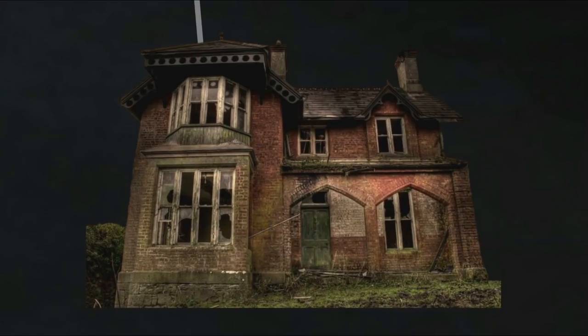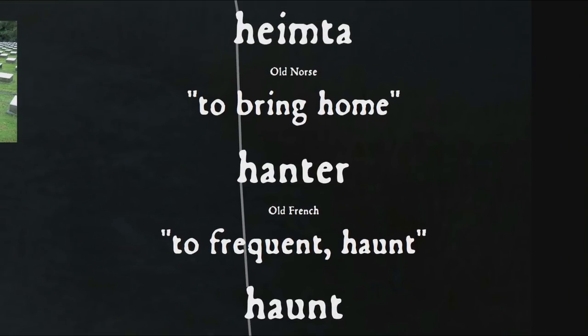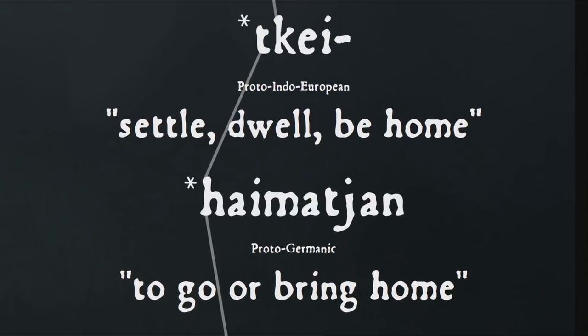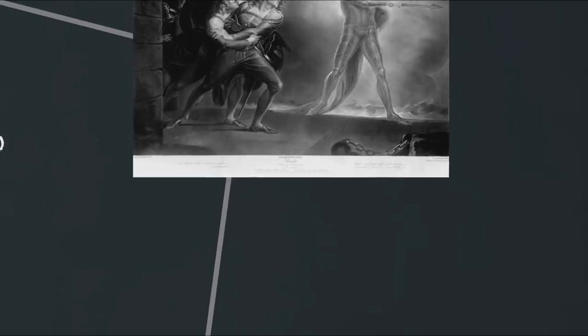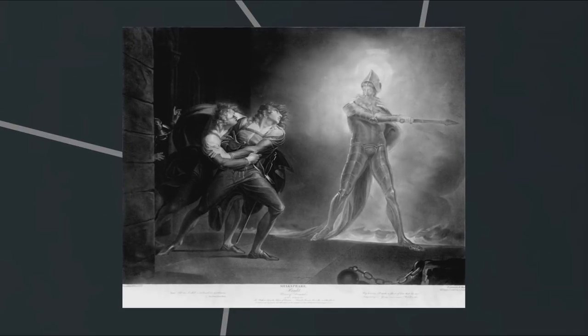Moving on to places ghosts are found, it turns out that haunted house is etymologically redundant. Haunt comes into English most directly from French hanter, meaning to frequent or haunt, ultimately from a Proto-Indo-European root that means be home. This root gives us English home, but it also gives us, through Old French, the diminutive form hamlet, a little village, and in the context of ghosts that inevitably reminds us of the famous ghost in Shakespeare's Hamlet, though that name is not etymologically related — but more on that in a minute.